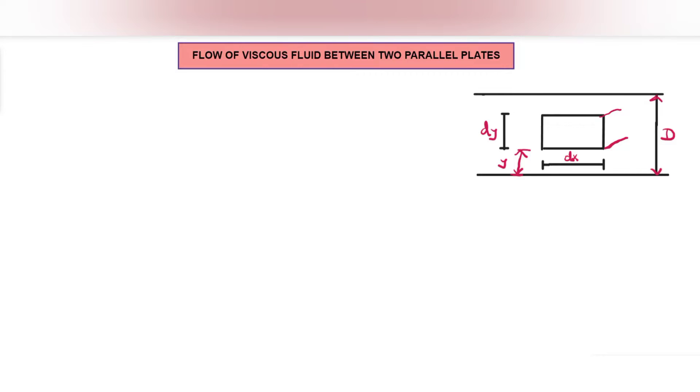Let's see the front view of the rectangular element. If it is 2D, we can see the width as well. The width is unity.